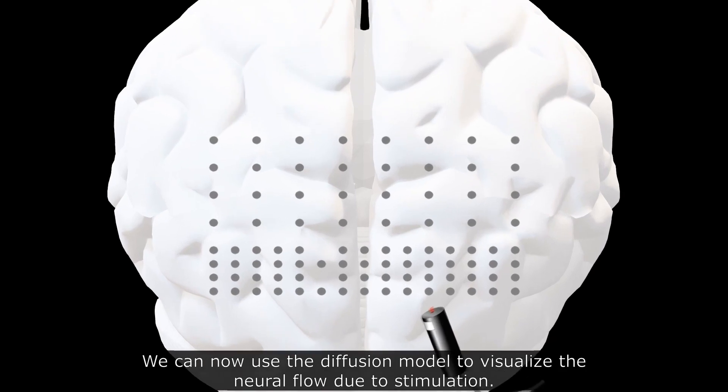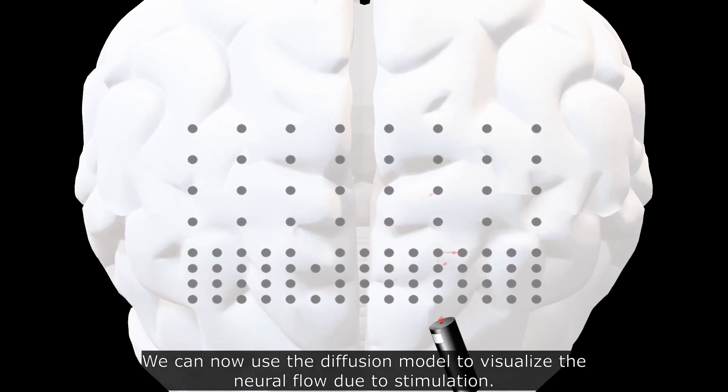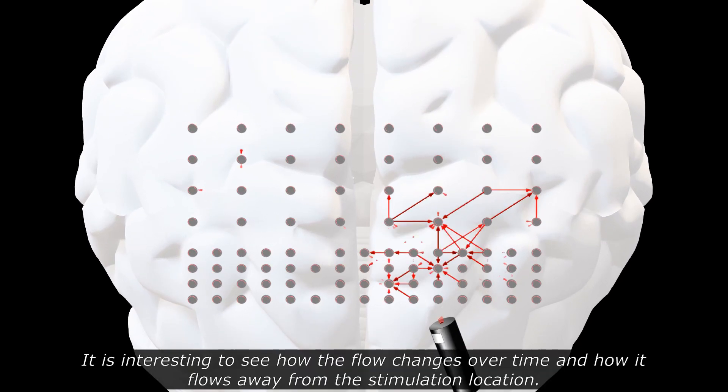We can now use the diffusion model to visualize the neural flow during stimulation. It is interesting to see how the flow changes over time and how it flows away from the stimulation location.